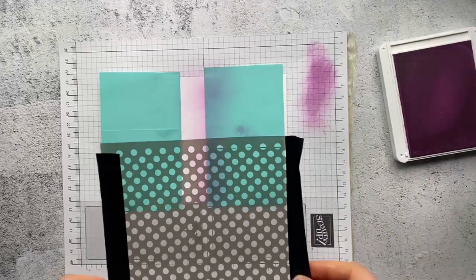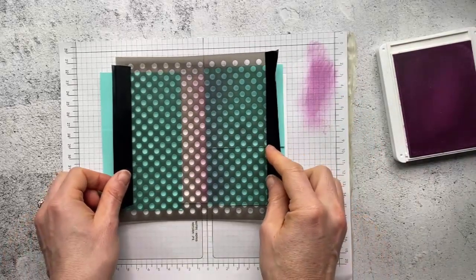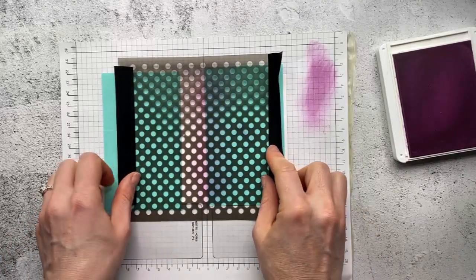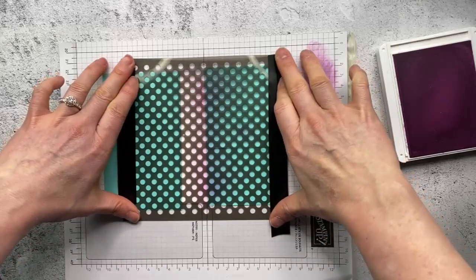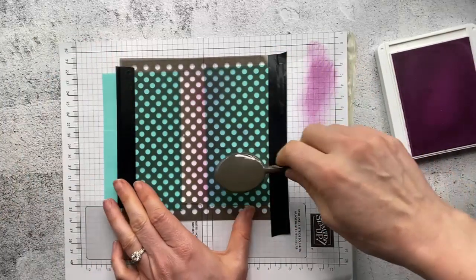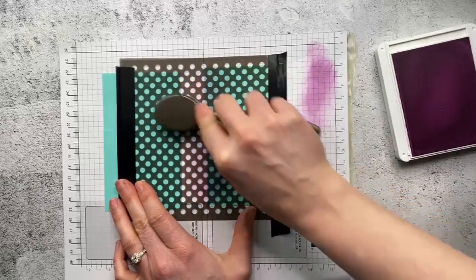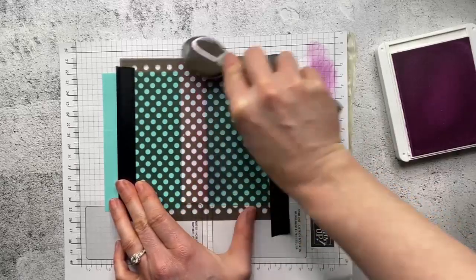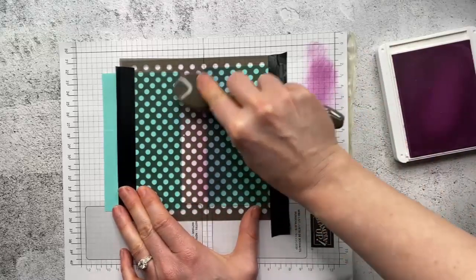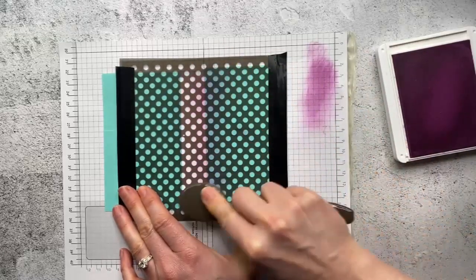From there I'm going to bring in one of our decorative masks and I'm going to use the polka dot one because it's quite fun and goes well with the feel of this stamp set. I'm just going to go over it lightly so I get light dots all over and then go over again a little more heavy on the right hand side.